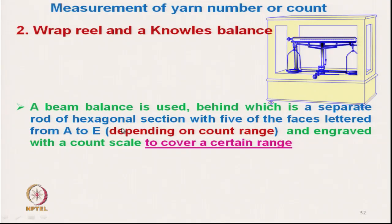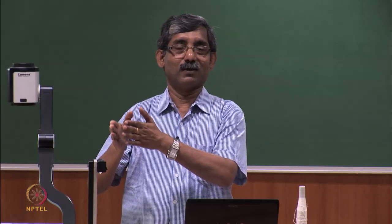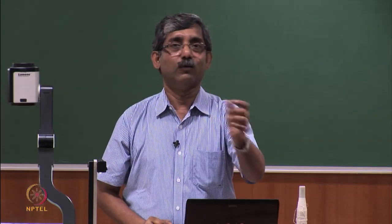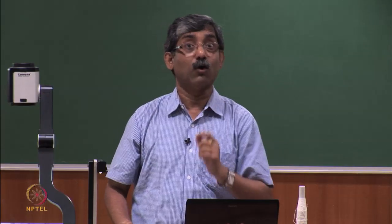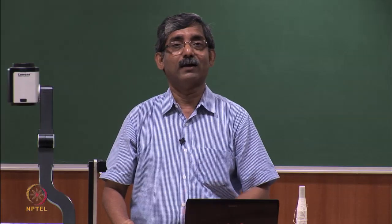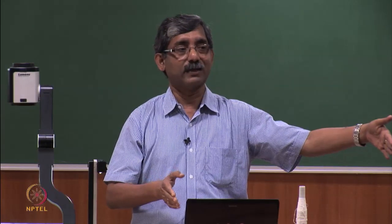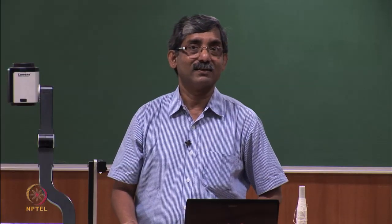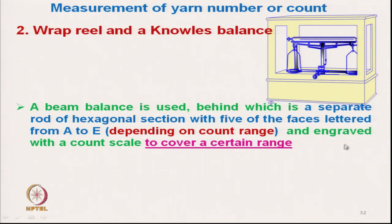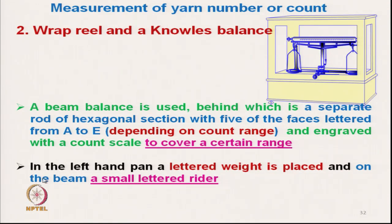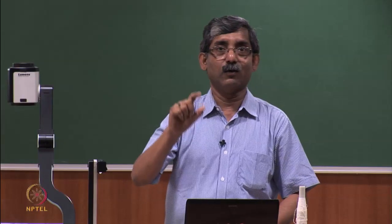Different count ranges are marked and engraved on the scale. The left-hand pan has a lettered weight — 5 such weights are available labelled A through E. If we know a yarn is approximately 50s count, we rotate the hexagonal rod to the appropriate face (say C) for that count range, and place the corresponding C weight on the left pan. A small lettered rider is also placed on the beam for each corresponding face.